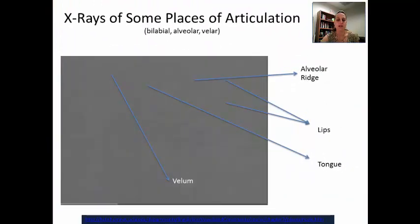Here's a video showing you the tongue hitting these different places — the alveolar ridge, the lips, the tongue, and the velum being used to make those different sounds.